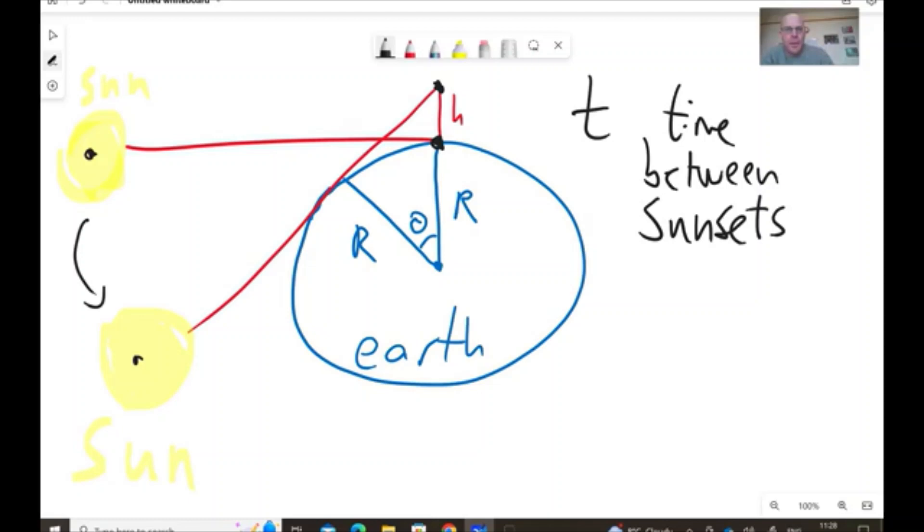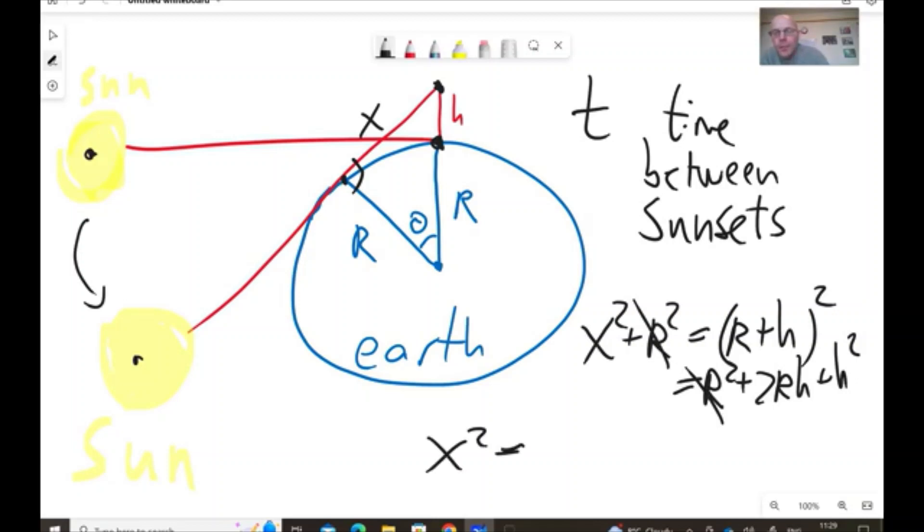So, let's do a bit of geometry. We have this triangle with right angle and this is x. So, the first equation is that x squared plus r squared is r plus h squared, which is r squared plus 2rh plus h squared.